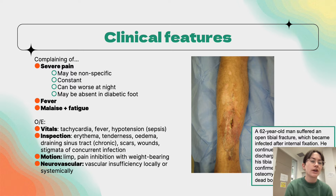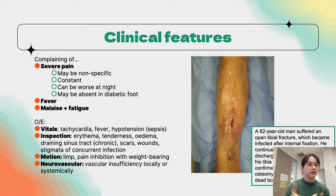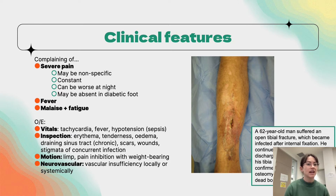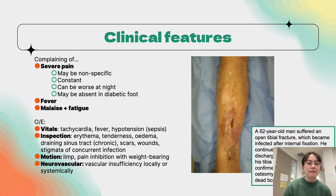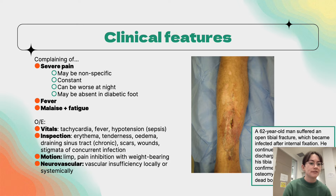A patient may present with severe pain, which can be nonspecific, constant, and worse at night. However, those with peripheral neuropathy — such as diabetic patients — may have no pain at all. Fever is more common in acute osteomyelitis, and patients may also have malaise and fatigue.